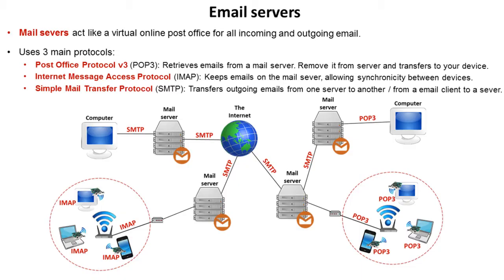Eventually at some point someone at the other end will try and access that email. When you're retrieving a mail from a mail server you're using one of these two protocols — POP3 or IMAP. POP3 retrieves emails from a mail server but it removes it from the server and transfers it to your device. I log onto my computer one day and the POP3 protocol goes to the mail server, sees there's an email there for me, retrieves it, and removes the email from the server.